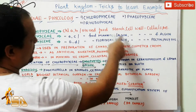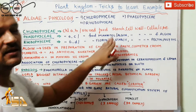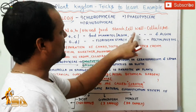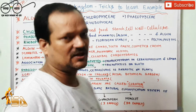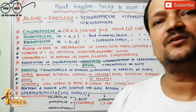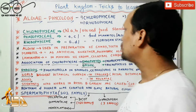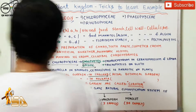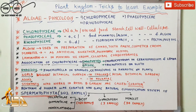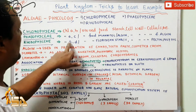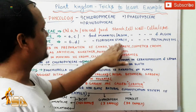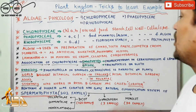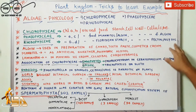Phaeophyceae has stored food called mannitol and algin. The cell wall structure contains cellulose along with additional cellulose compounds present. Next is rhodophyceae, which we call red algae. In rhodophyceae, chlorophyll A and D are present, the stored food is floridean starch, and the cell wall component has a very low amount of cellulose but contains pectin and polysulfate molecules.